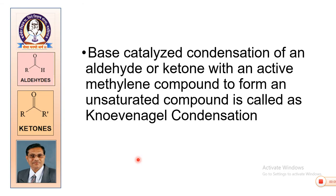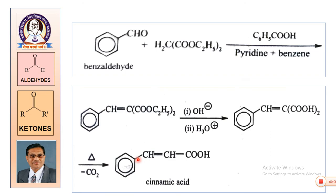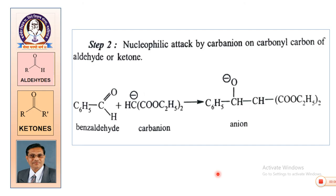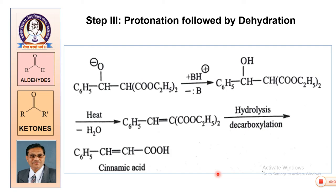To summarize: base-catalyzed condensation of an aldehyde or ketone with an active methylene compound to form an unsaturated compound is called Knoevenagel condensation. The base is the catalyst; the aldehyde or ketone and active methylene compound are the reactants; the product is an unsaturated compound. The active methylene compound condenses with the carbonyl CHO group, giving an unsaturated compound by elimination of H2O. This is then hydrolyzed using alkali, neutralized using acid, and decarboxylated to get cinnamic acid. The mechanism: base abstracts a proton forming a carbanion; the carbanion undergoes nucleophilic addition to the carbonyl carbon giving an anion; the anion is protonated, followed by dehydration, hydrolysis, and decarboxylation, giving the final unsaturated acid.